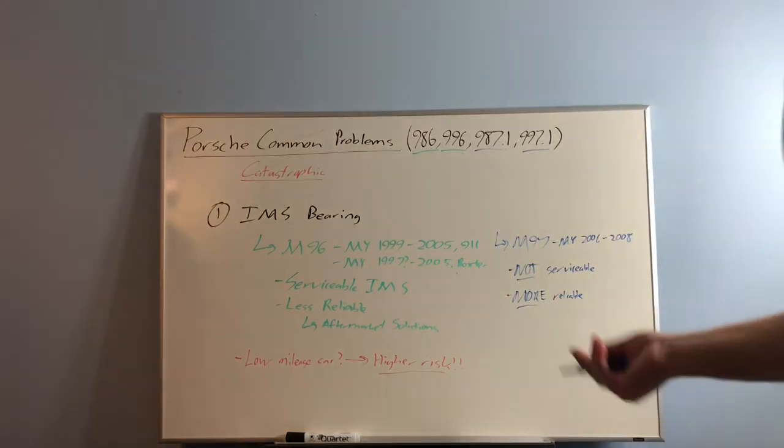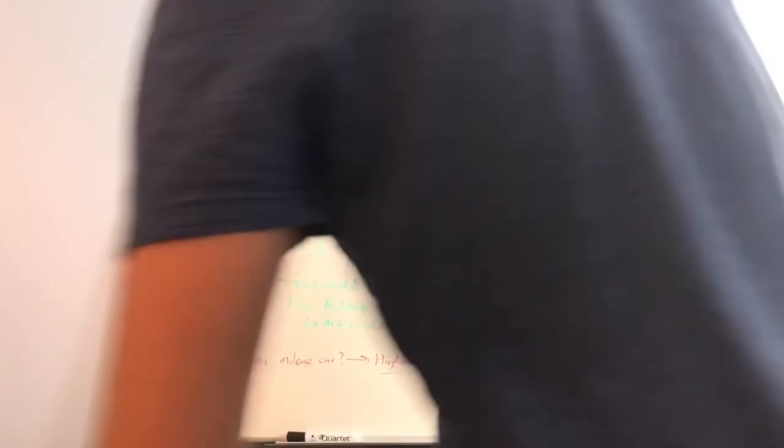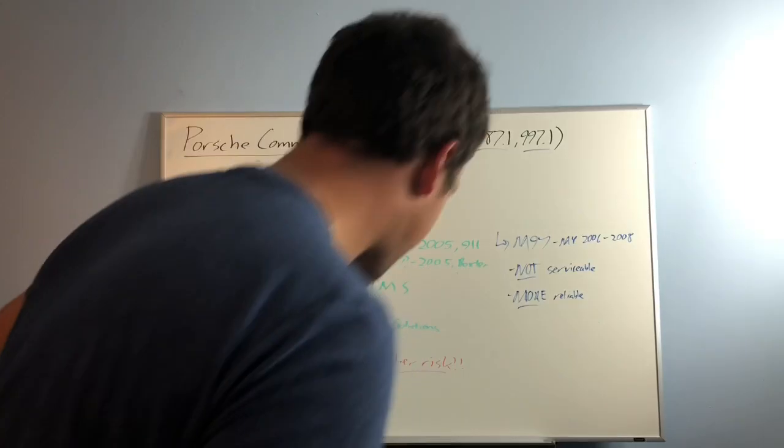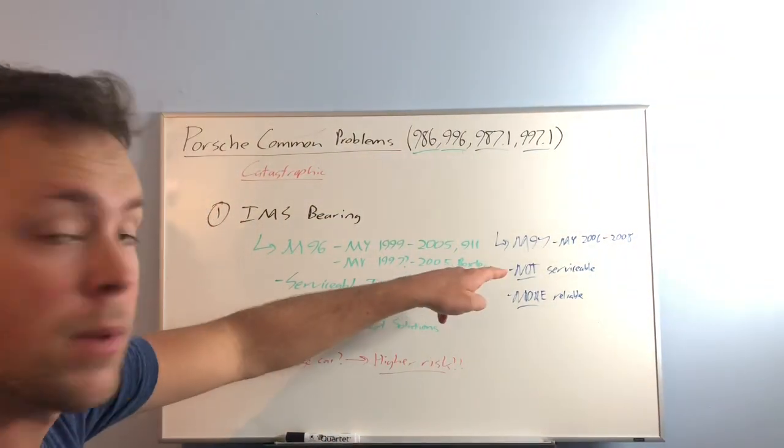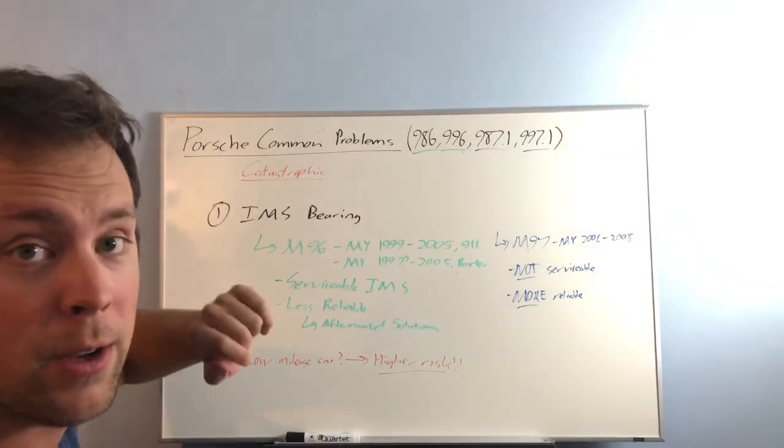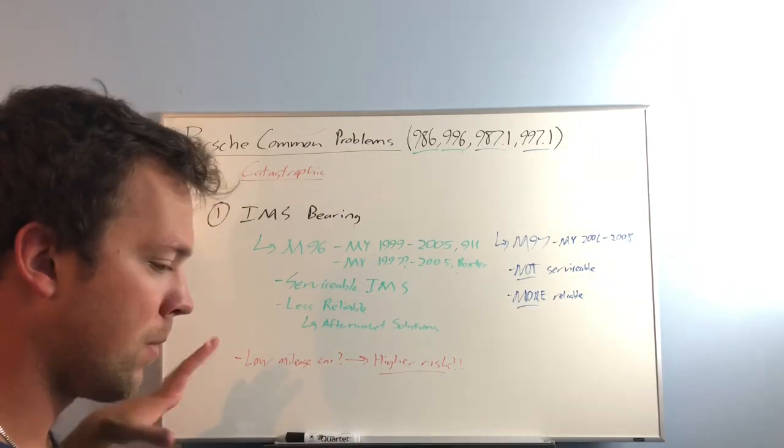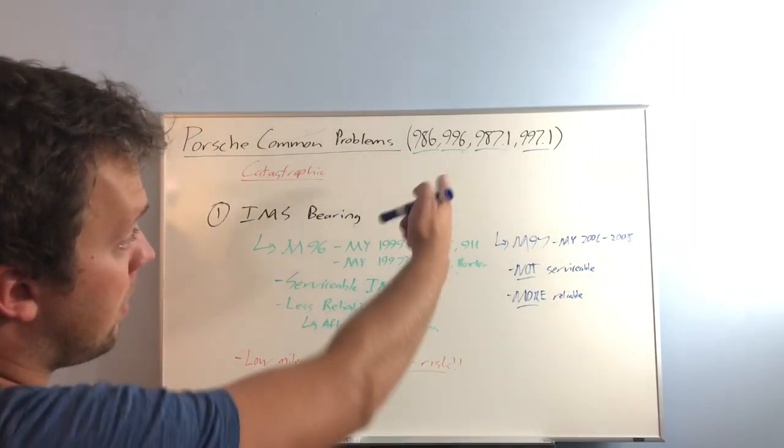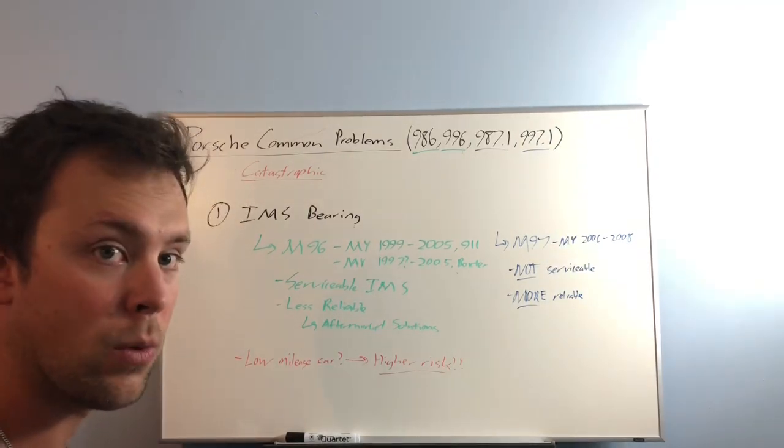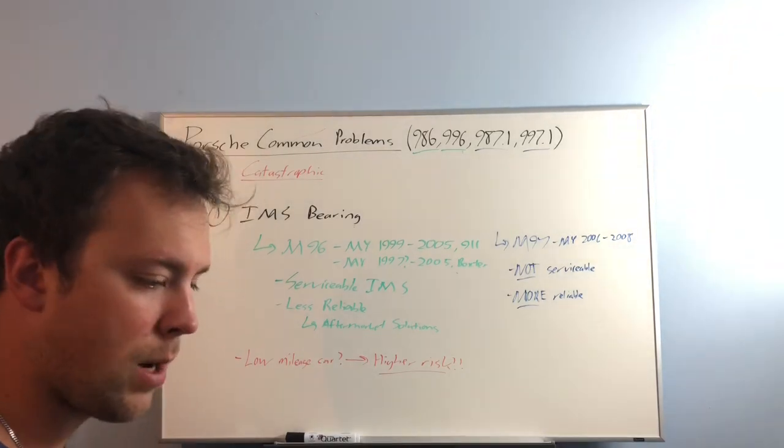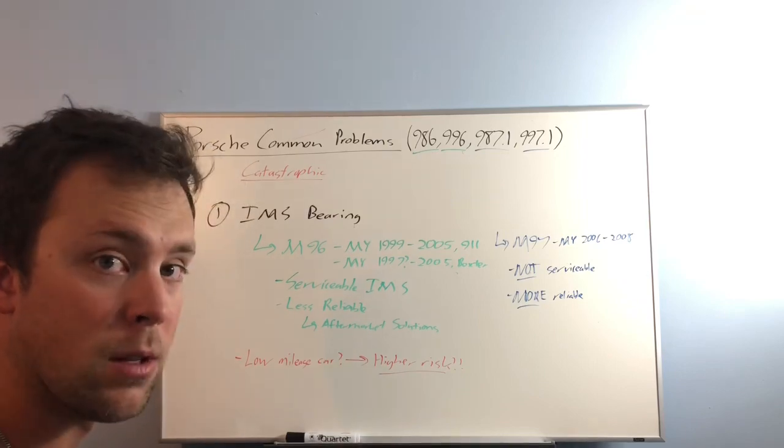But more reliable. These have been known to, they can fail. They have some phantom failures. Again, the low mileage rule does apply for the M97 engine. If you find a car with lower miles, I would honestly be a little bit hesitant to buy it. The sweet spot in today's day and age, these cars are anywhere from 10 to 12 years old. I would say the sweet spot would be between 35 to 50,000 miles on the low end.